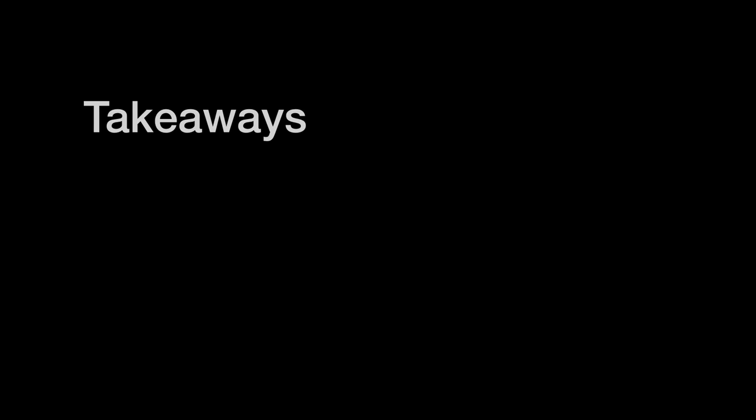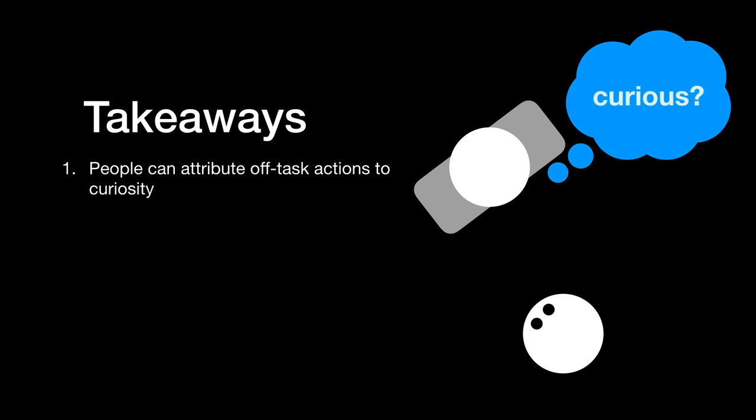So what do people make of an intrinsically motivated robot? From these experiments, it seems like people are willing to attribute off-task exploration actions to curiosity. But thinking that a robot is curious doesn't translate to thinking that it's more competent. Beyond rating curious robots lower on competence, we saw that many participants just didn't like when the robot did things that it wasn't told to do.